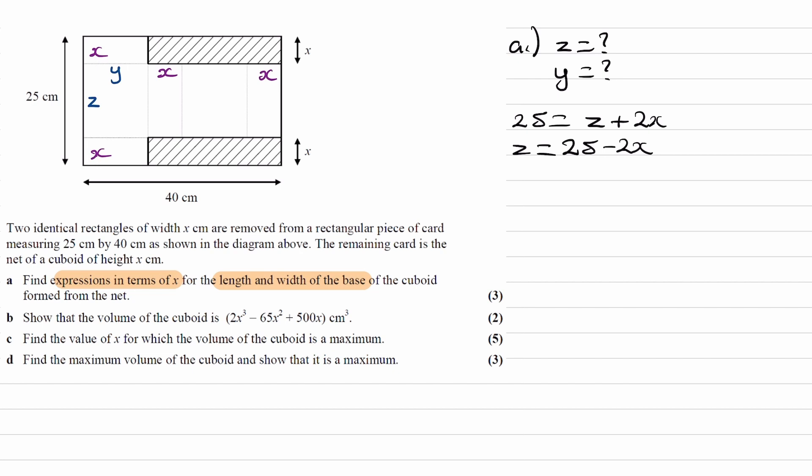And now for y, we can consider this length here. So if this is the base of our shape, the base of our cuboid, this will have to be the top. And that would mean that this side is also y. We can say that these four lengths here will add up to make 40. So that will end up being 2y plus 2x is 40. Divide everything by 2, and then rearrange for y. We get y is equal to 20 minus x. So then these are our two answers for part A.